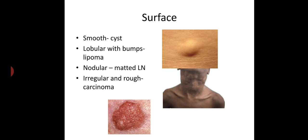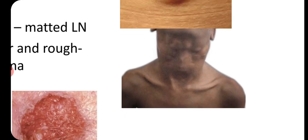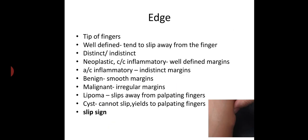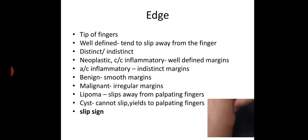Surface — smooth as in cysts, lobular with bumps as in lipoma, nodular as in matted lymph nodes, and irregular and rough as in carcinoma. Next, edge — assessed with the tip of fingers. If well defined, the swelling tends to slip away from the finger. In neoplastic and chronic inflammatory cases, margins are well defined; in acute inflammatory swelling, margins are indistinct. Smooth margins are seen in benign swelling, irregular margins in malignant swelling. In lipoma, the swelling slips away from the palpating fingers (slip sign), but in cysts, the swelling cannot slip.